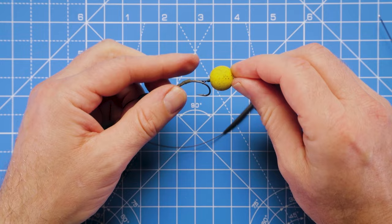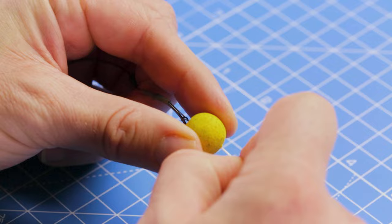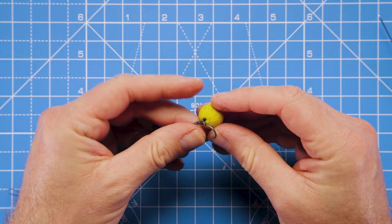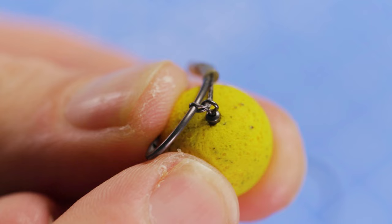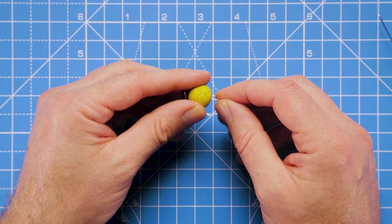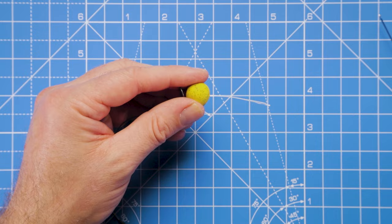And then get a good grip of both tag ends and pull that hook bait down onto the swivel. So we want that swivel actually inserted into the hook bait as you can see here. And that swivel is actually gripping the hook bait already, but just to doubly secure that hook bait into place...